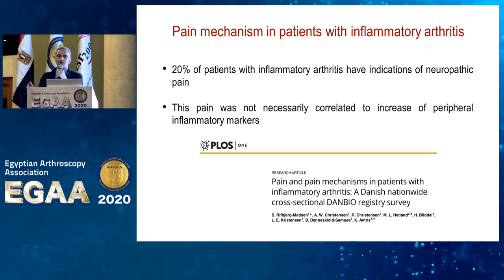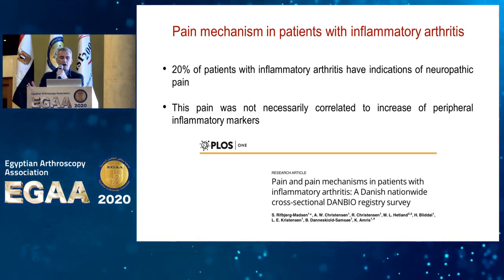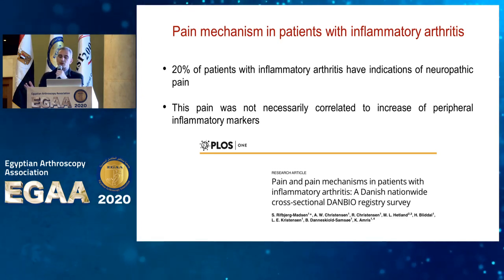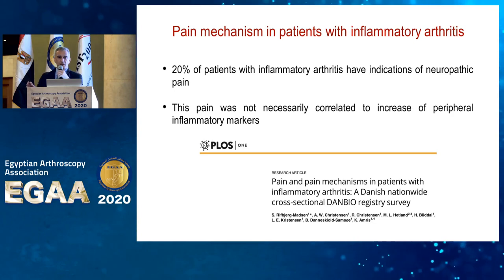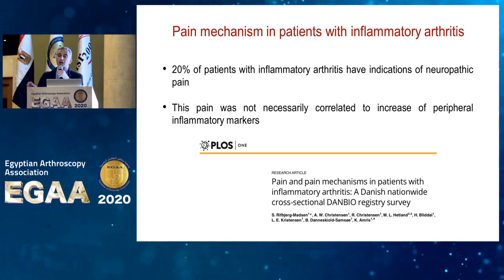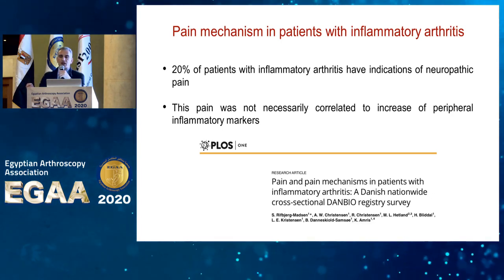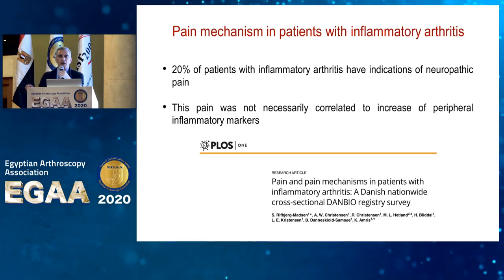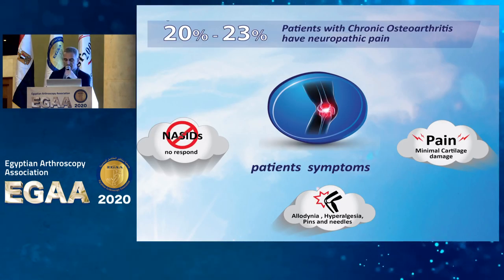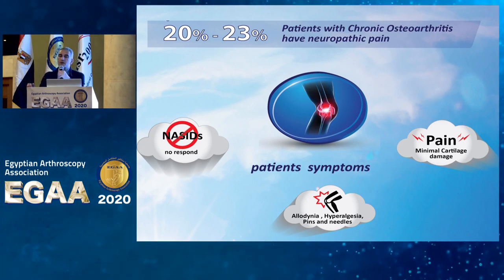Regarding pain mechanisms, this Danish study was conducted to look at patients with inflammatory arthritis of their knees. They found that 20% of the study population had a form of neuropathic pain, and it wasn't directly correlated to the presence or increase of inflammatory markers. So it is a kind of neuropathic pain that affects patients with inflammatory arthritis regardless of whether you can control the inflammation or not.